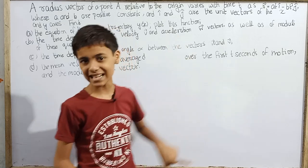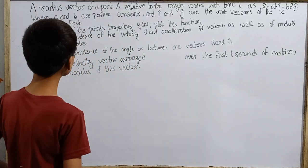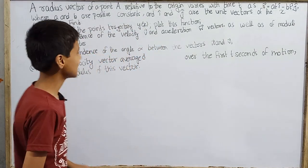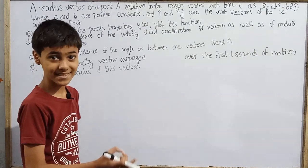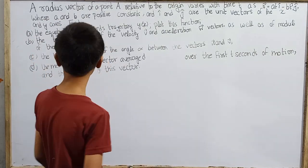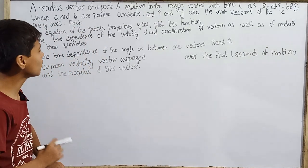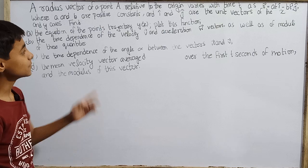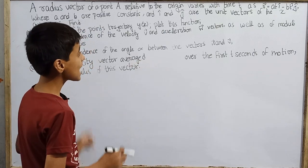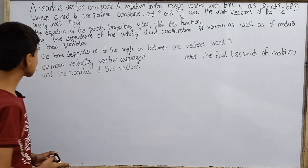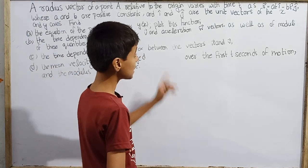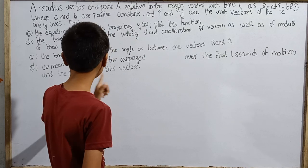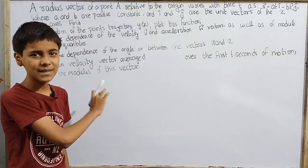From Irodov's kinematics section, question 24: the radius vector of a point A relative to the origin varies with time t as vector r equals a·t·î minus b·t²·ĵ, where a and b are positive constants and î and ĵ are unit vectors of the x and y axes. Find: (a) the equation of the point's trajectory y versus x and plot this function; (b) the time dependence of the velocity vector v and acceleration vector w, as well as the moduli of these quantities; (c) the time dependence of the angle alpha between vectors w and v; and (d) the mean velocity vector averaged over the first t seconds of motion and the modulus of this vector.